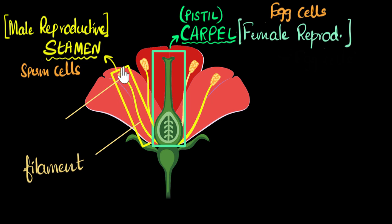And the part on top of that, kind of like the head of the stamen, we call that the anther. And guess what? Anther produces something called the pollen grains.